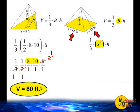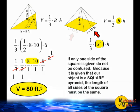Because the base of our pyramid is a square, that means that the length of each side of our square should be exactly the same. Keep this in mind just in case you encounter a problem which only has one side labeled. Don't get confused by this. Because it is given that our object is a square pyramid, the length of all sides of the square must be the same.